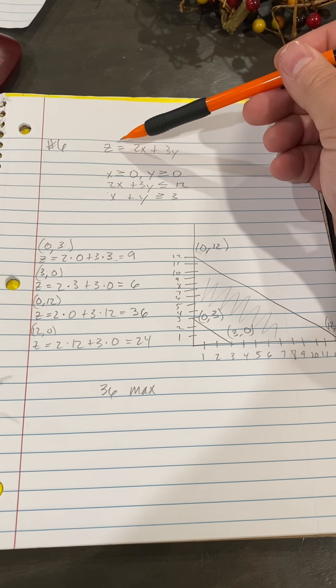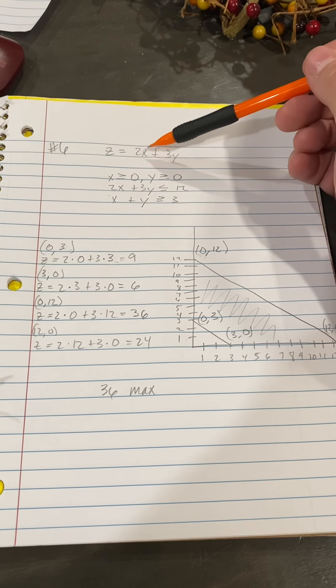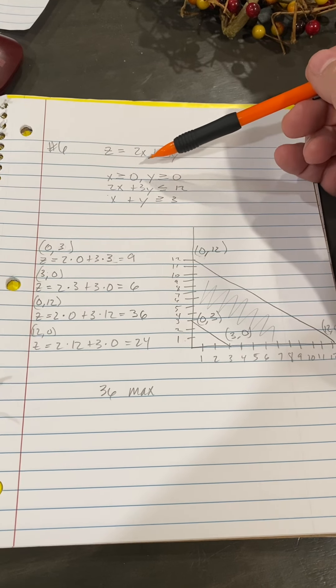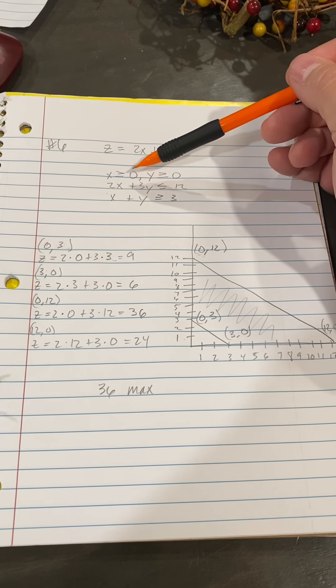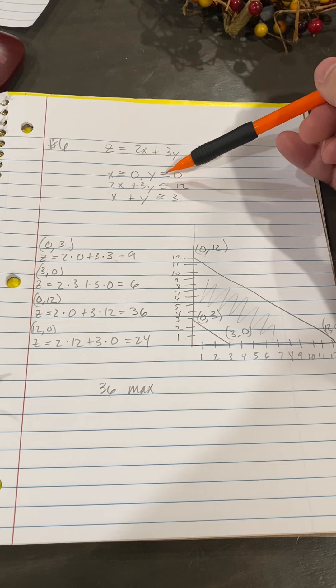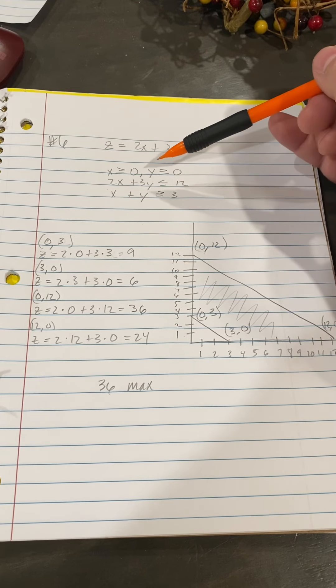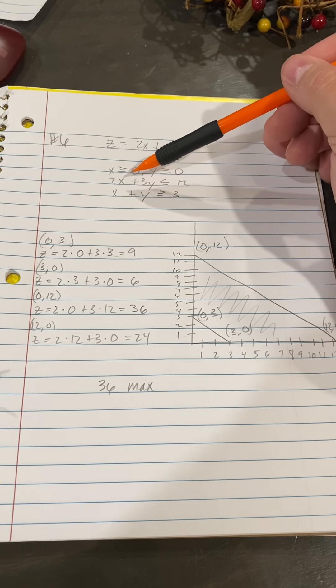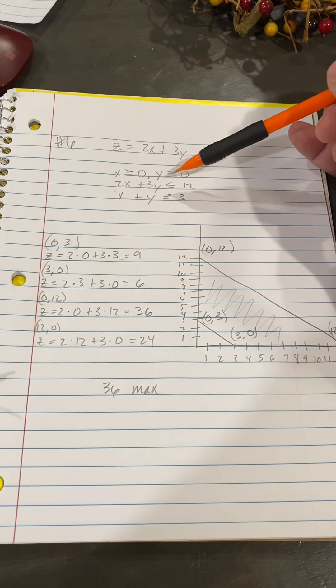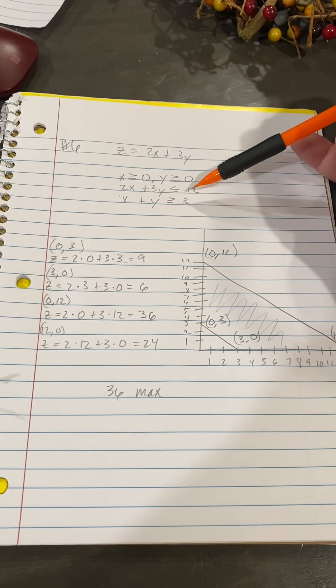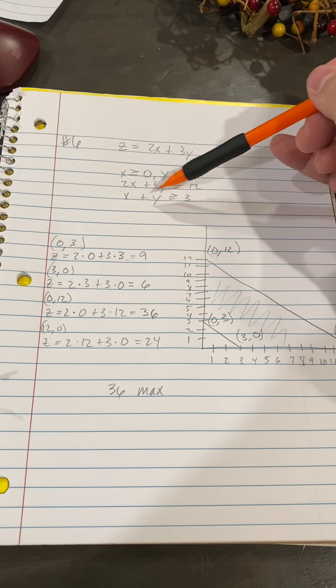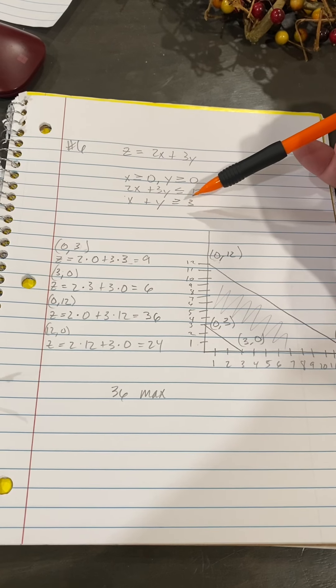I have written my equation Z equals 2X plus 3Y. X is greater than or equal to zero. Y is greater than or equal to zero. 2X plus 3Y is less than or equal to 12. X plus Y is greater than or equal to 3.